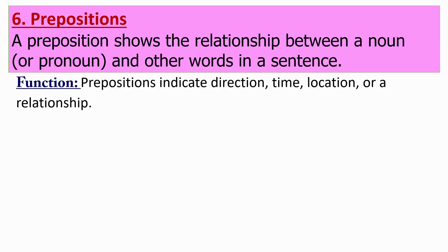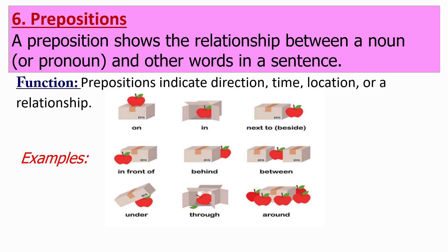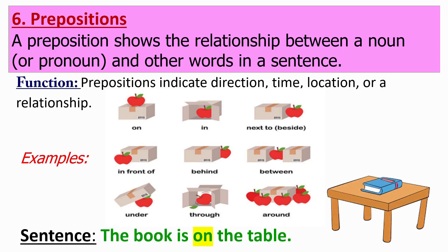Now let's check what are prepositions. A preposition shows the relationship between a noun or pronoun and other words in a sentence. Prepositions indicate direction, time, location, or a relationship. For examples: on, in, next to, beside, in front of, behind, between, under, through, around, etc. Now let's check a sentence: "The book is on the table." The word on describes where the book is, so it's a preposition.